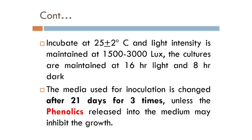After inoculation, the culture tubes are incubated at 25 ± 2°C. Light intensity is maintained at 1500 to 3000 lux. The cultures are maintained at 16 hours light and 8 hours dark period. The media used for inoculation is changed after 21 days for 3 times, as phenolic substances released into the medium may inhibit the growth of plant tissue. The medium must be continually changed and subculturing is also carried out.